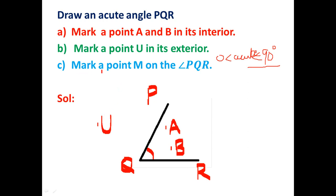C part: mark a point M on the angle PQR. It means on this angle anywhere I can mark a point. So let me take it here and mark this as M. So this is the solution of this question.